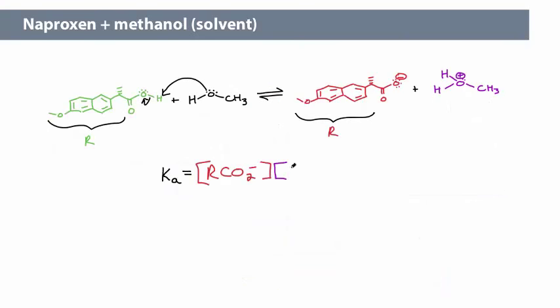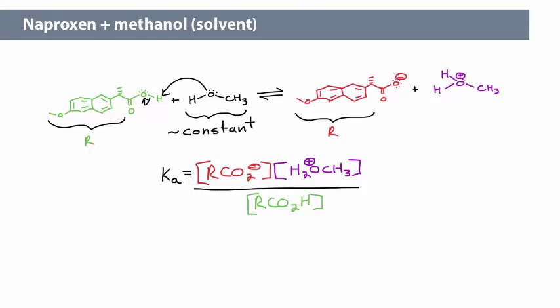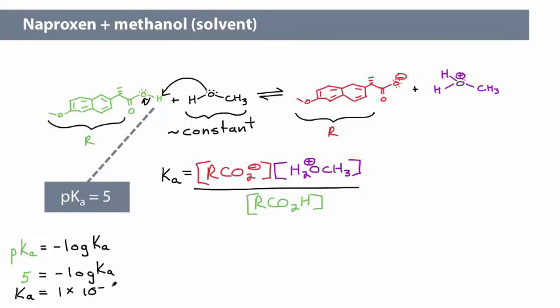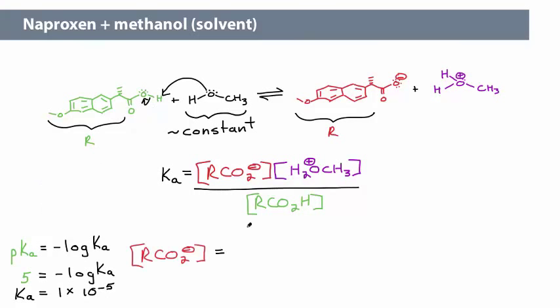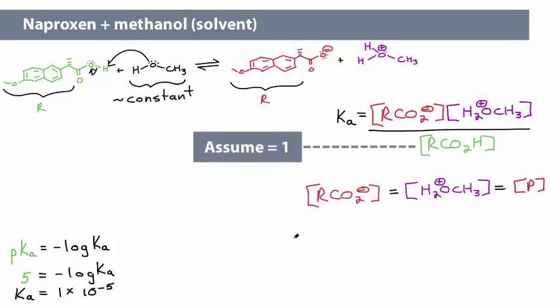To know for sure, we can calculate the relative concentration of reactants and products. Using the pKa value of naproxen of approximately 5, calculate the Ka for the reaction to be 1 times 10 to the negative 5. The concentration of the two products is equal. Assume a concentration of naproxen of 1. This will get us to a ratio between starting materials and products.